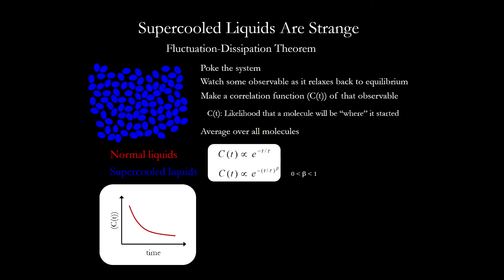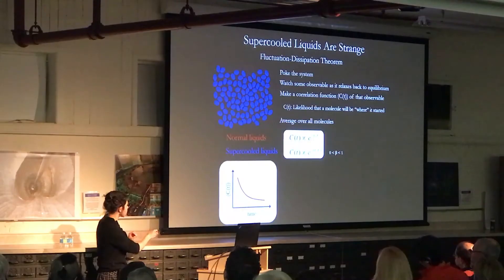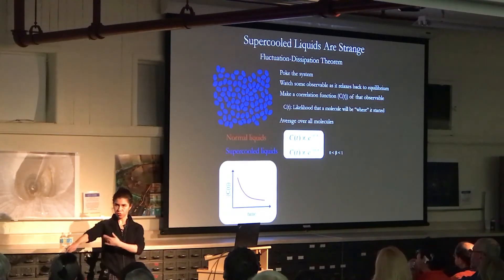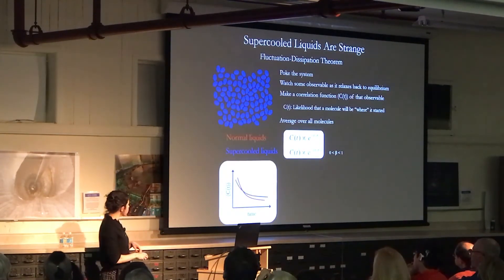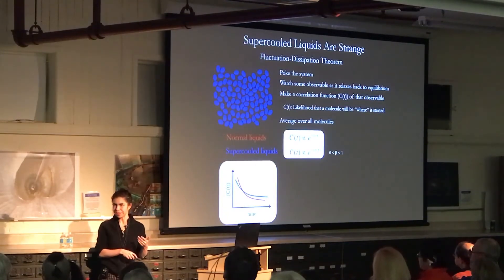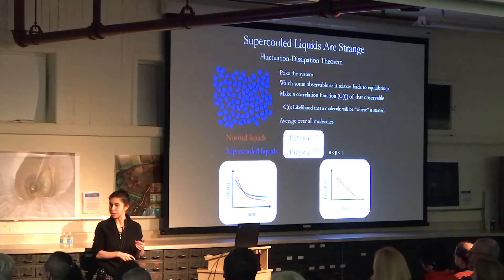So just to give you a sense of what this is going to look like, for a normal liquid, this is what that exponential curve looks like as a function of time. That relaxation goes smoothly down. But for a supercooled liquid, it would look something like this. But it's not so easy to distinguish, so instead we're going to plot them in a different way.